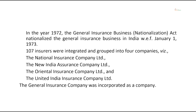In 1972, the General Insurance Business Nationalization Act nationalized the general insurance business in India with effect from January 1, 1973. 107 insurance companies were integrated and grouped into 4 companies: the National Insurance Company Limited, the New India Assurance Company Limited, the Oriental Insurance Company Limited, and the United India Assurance Company Limited.